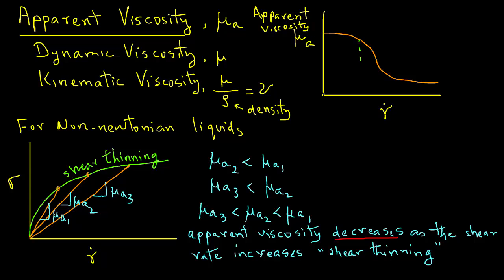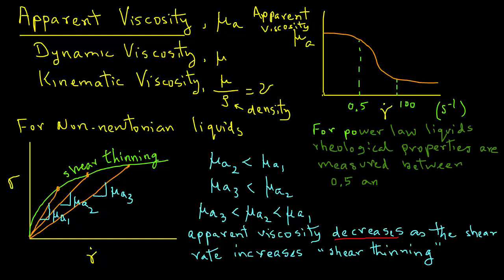We notice that the apparent viscosity decreases typically in the range of 0.5 to 100 per second for shear rate. In the case of power law liquids that show this shear thinning behavior, the rheological properties are measured between 0.5 and 100 per second.